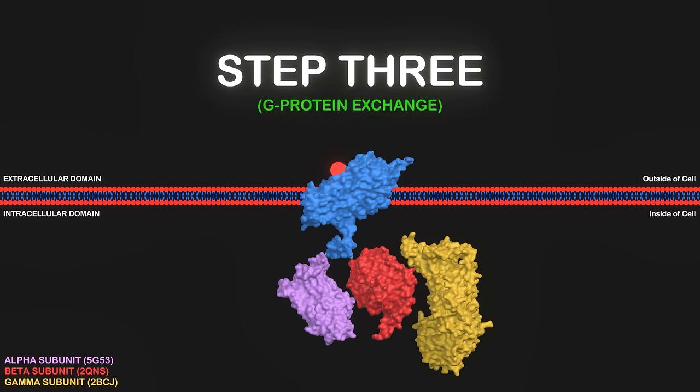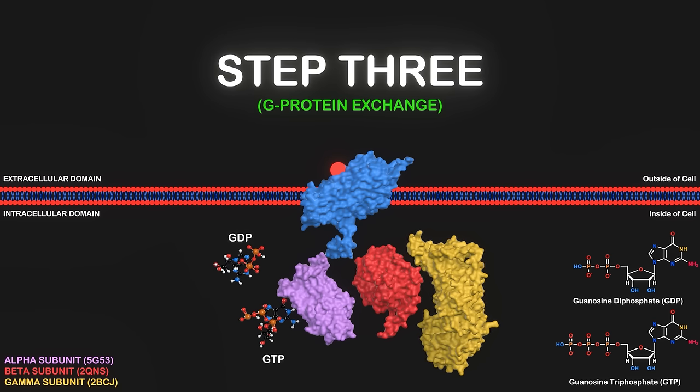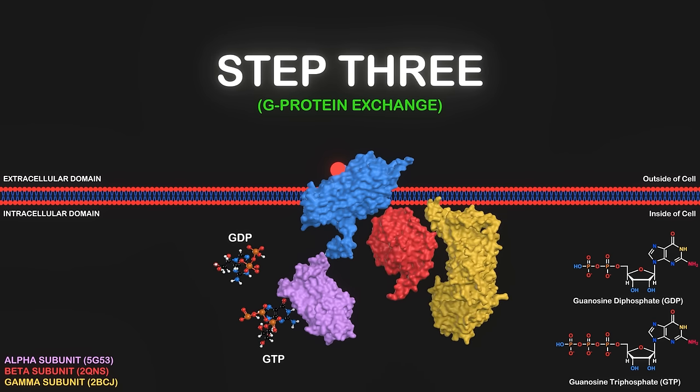The third step is G-protein exchange. When the G-protein coupled receptor is activated by binding to a ligand such as dopamine, a complex chain of events is set into motion. The GDP molecule bound to the alpha subunit of the G-protein is replaced with GTP, leading to the dissociation of the alpha subunit from the beta and gamma subunits.